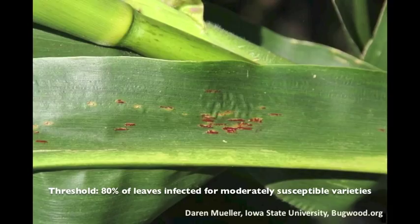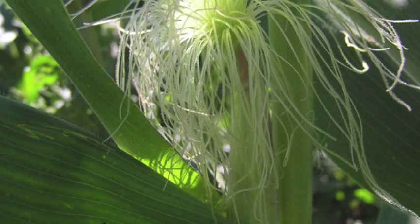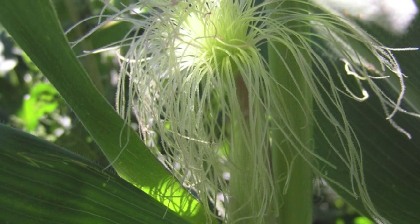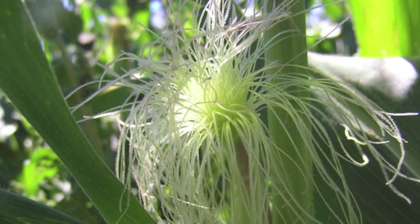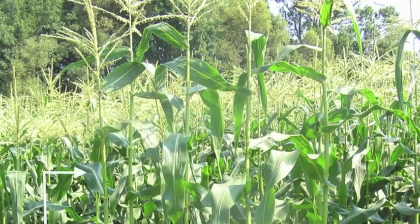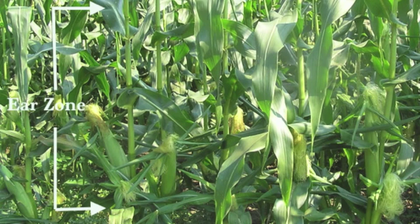Scouting for flea beetles and rust should begin when seedlings emerge and continue through to tasseling. When scouting silking corn, the threshold is much lower at 5%, and you will need to use the associated columns to make a management decision. Scouting follows the same V-shaped pattern, but you will look at five corn plants that are silking — if one of the five consecutive plants is not yet silking, skip it and move to the next. You will focus most of your attention on the ear zone, which includes two leaves above and one leaf below the corn ears. Carefully inspect the silks and ear tips for any sign of damage or larvae.